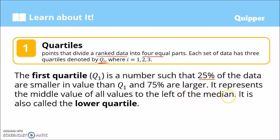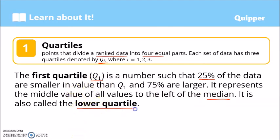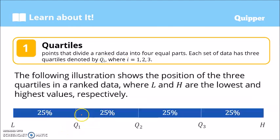If we recall, the median divides the data set into 2 equal parts — it's at the very middle. And to the left of the median, the middle value of those on the left is the first quartile. We also call the first quartile the lower quartile.